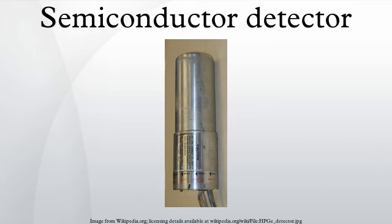As of 2012, HPGe detectors commonly use lithium diffusion to make an N-plus ohmic contact, and boron implantation to make a P-plus contact. Coaxial detectors with a central N-plus contact are referred to as N-type detectors, while P-type detectors have a P-plus central contact. The thickness of these contacts represents a dead layer around the surface of the crystal within which energy depositions do not result in detector signals. The central contact in N-type detectors is opposite to the surface contact, making the dead layer in N-type detectors smaller than the dead layer in P-type detectors. Typical dead layer thicknesses are several hundred micrometers for a lithium diffusion layer, and a few tenths of a micrometer for a boron implantation layer.